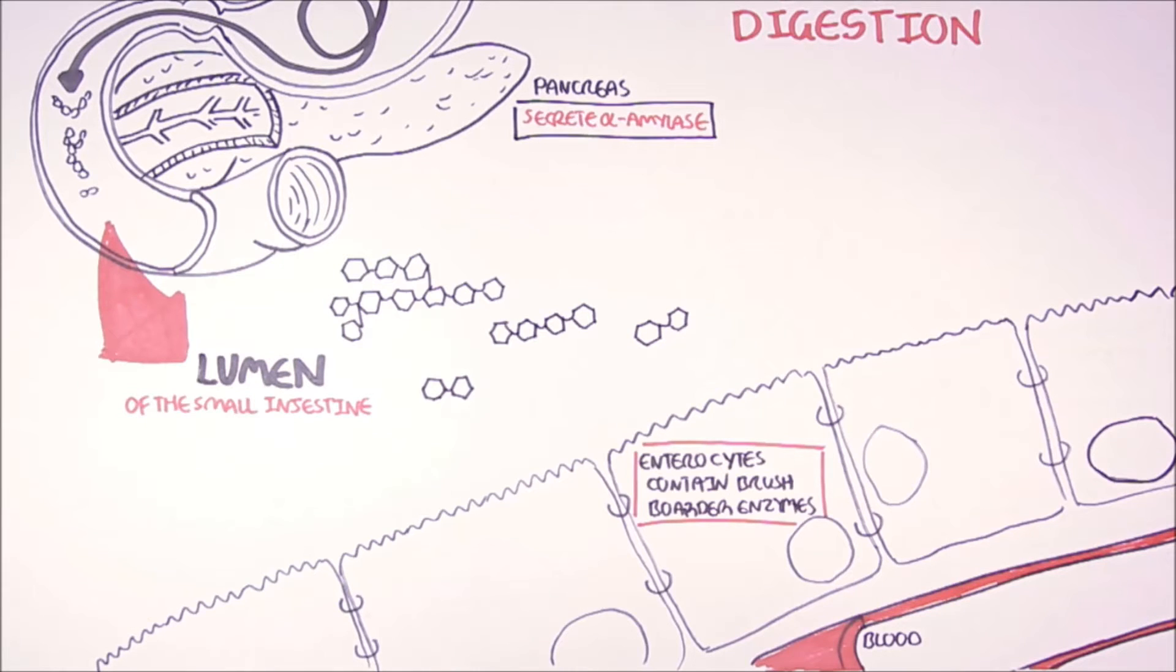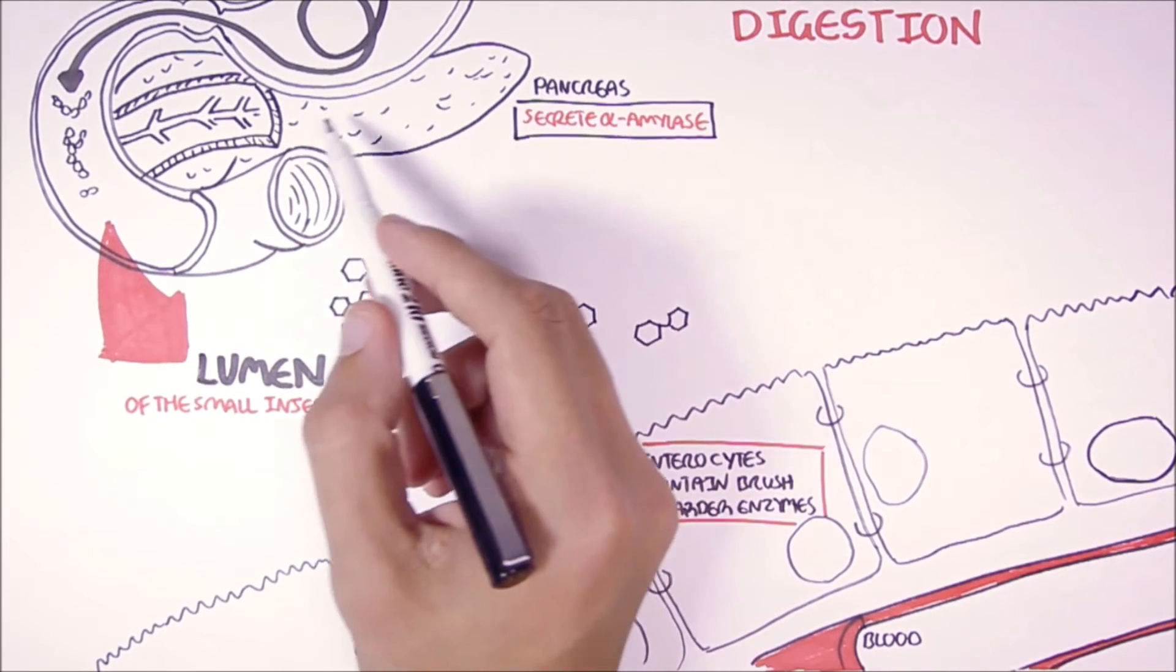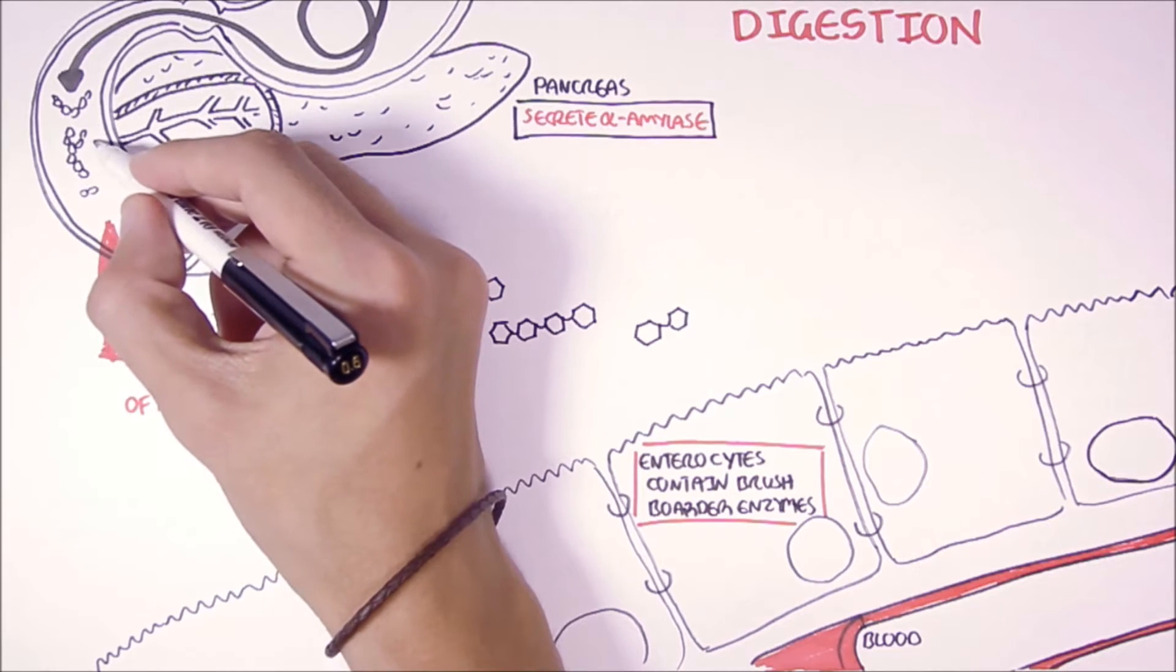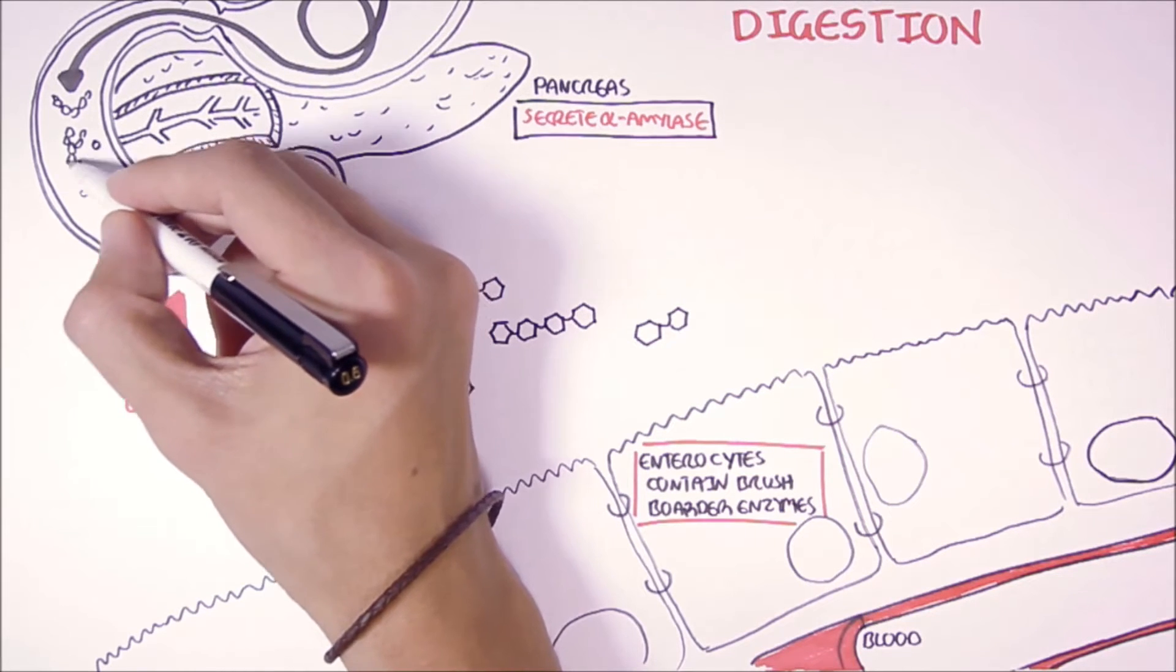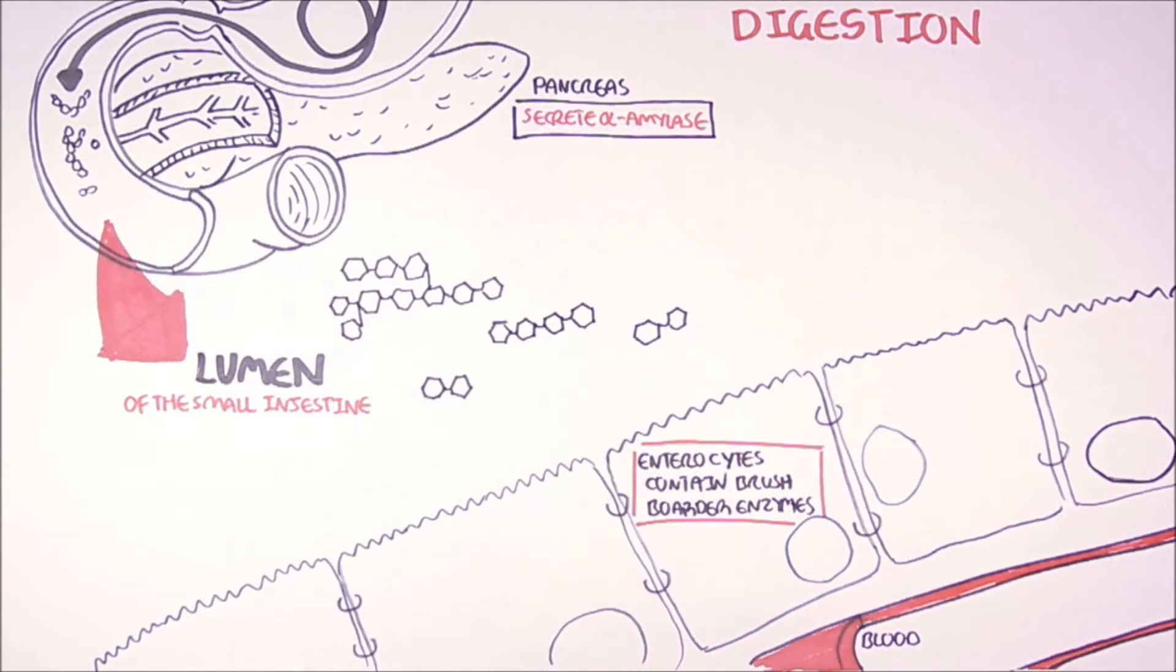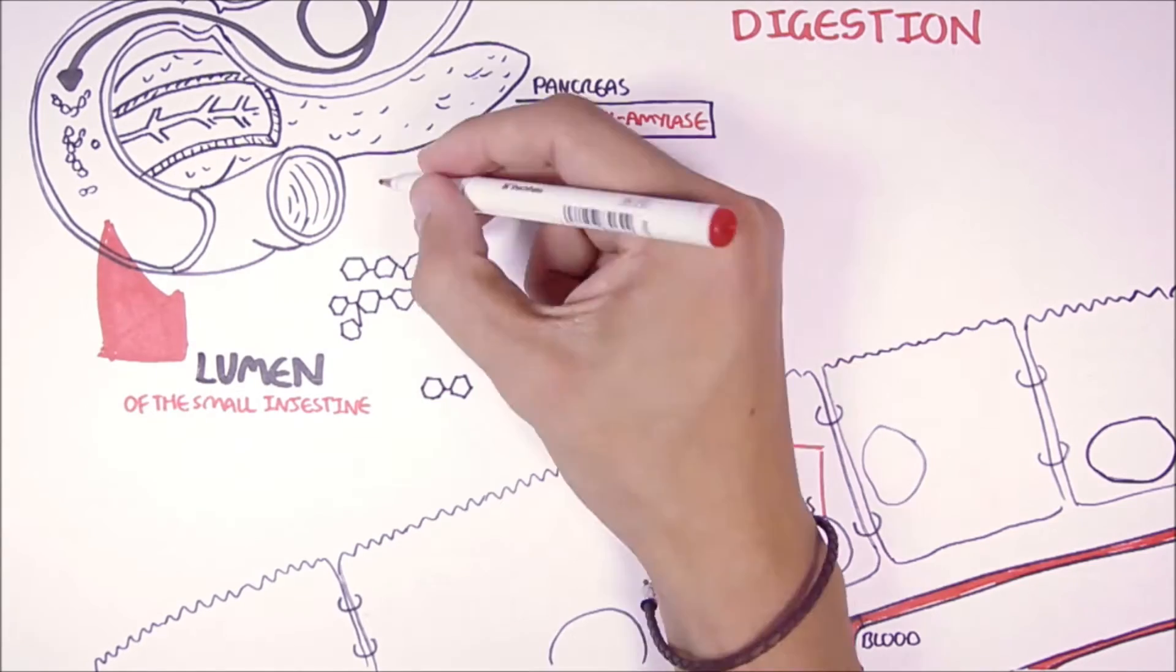So there was alpha-amylase secreted from the salivary glands and the pancreas. The pancreatic alpha-amylase will be secreted into the small intestine where it will break down the alpha-1,4 glycosidic bonds, just as what the salivary amylase did.